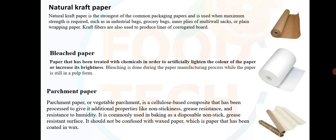Natural kraft paper is the strongest of the common packaging papers and is used when maximum strength is required, such as industrial bags, grocery bags, inner plies of multi-wall sacks or plain wrapping paper. Kraft fibers are also used to produce liner of corrugated board. Bleached paper has been treated with chemicals to artificially lighten the color of the paper or increase its brightness; bleaching is done during the papermaking process while the paper is still in pulp form.